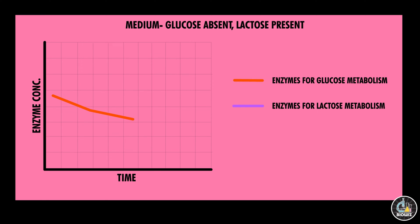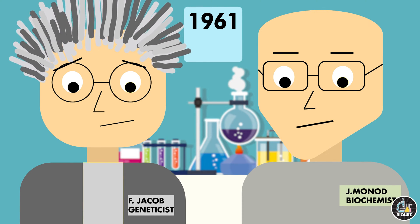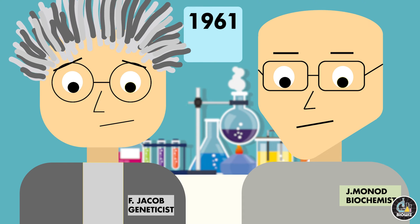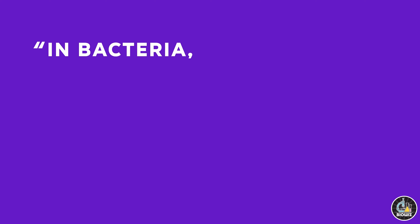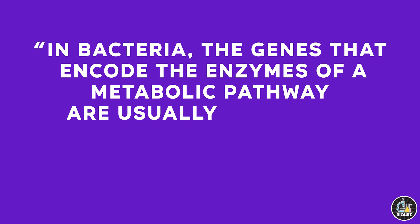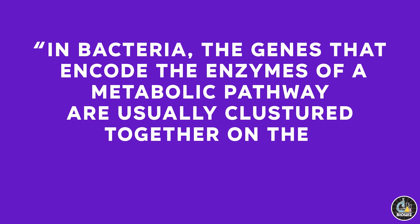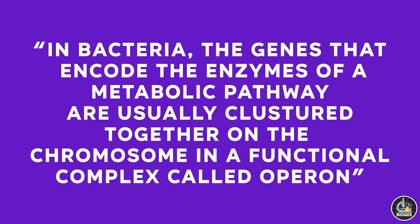But when E. coli were transferred to a medium lacking glucose but having lactose, the bacteria started to produce the enzymes required for lactose breakdown within a few minutes. Jacob and Monod were able to identify the mechanism behind it. According to them, in bacteria, the genes that encode the enzymes of a metabolic pathway are usually clustered together on the chromosome in a functional complex called an operon.